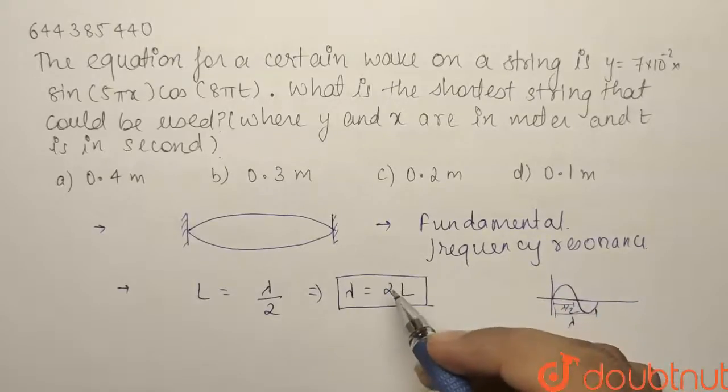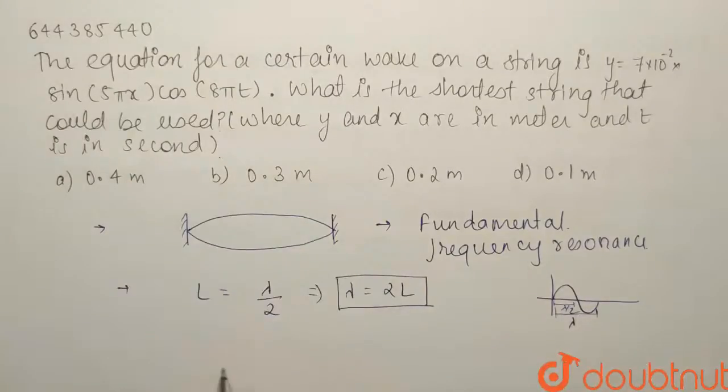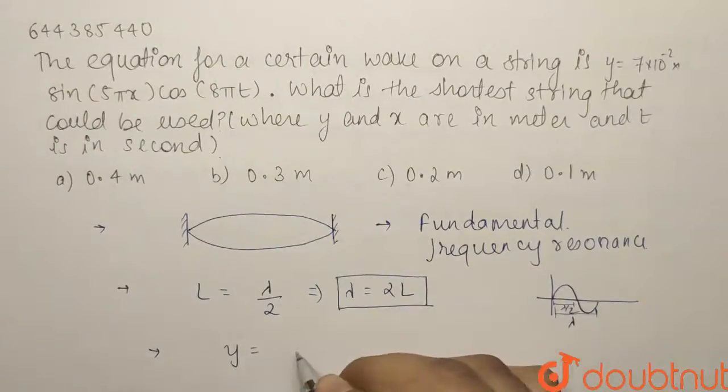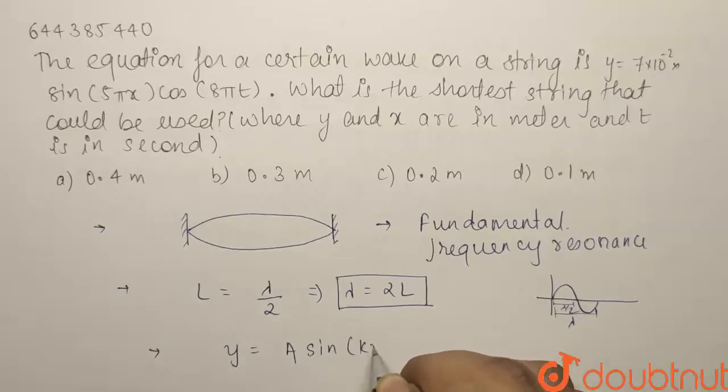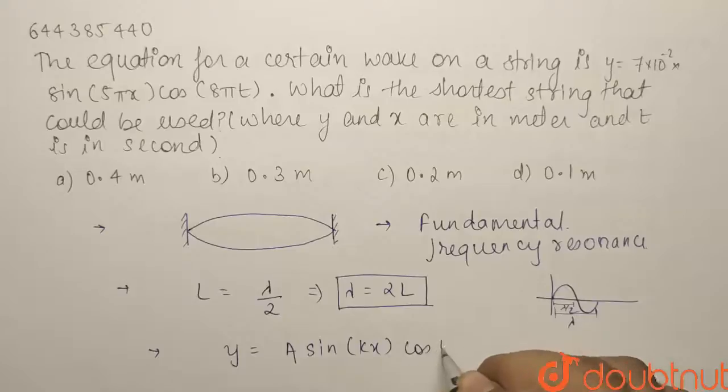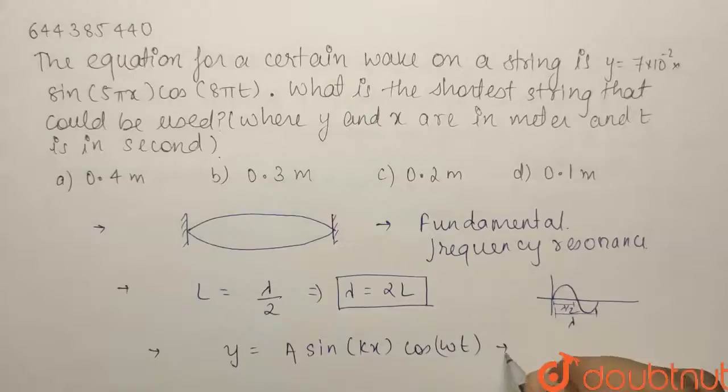Comparing this equation with the equation of a standing wave, which is A sin(kx) cos(ωt), we get k = 5π.